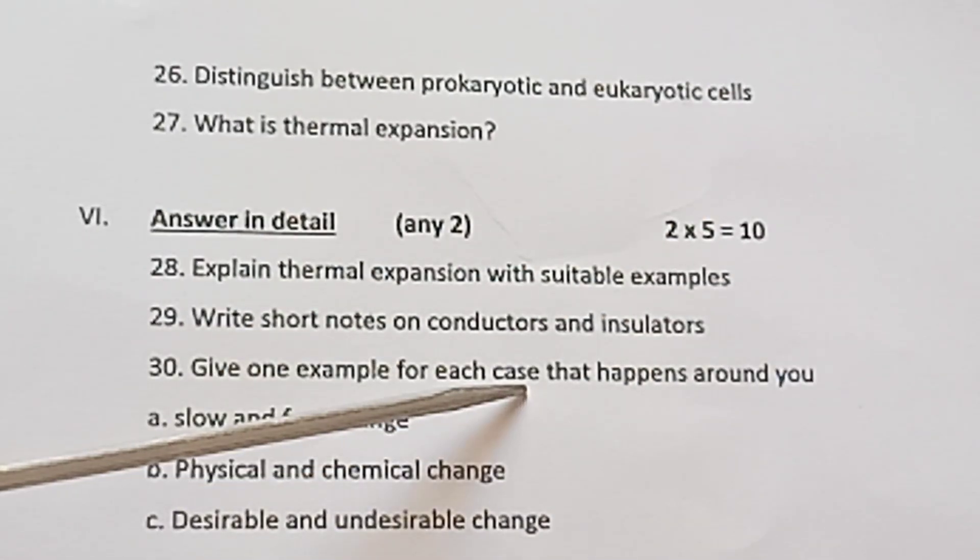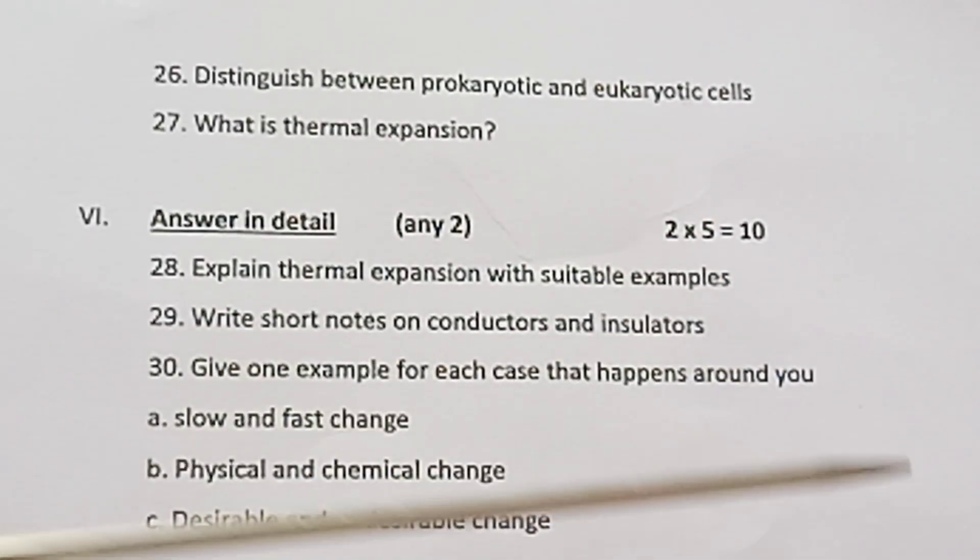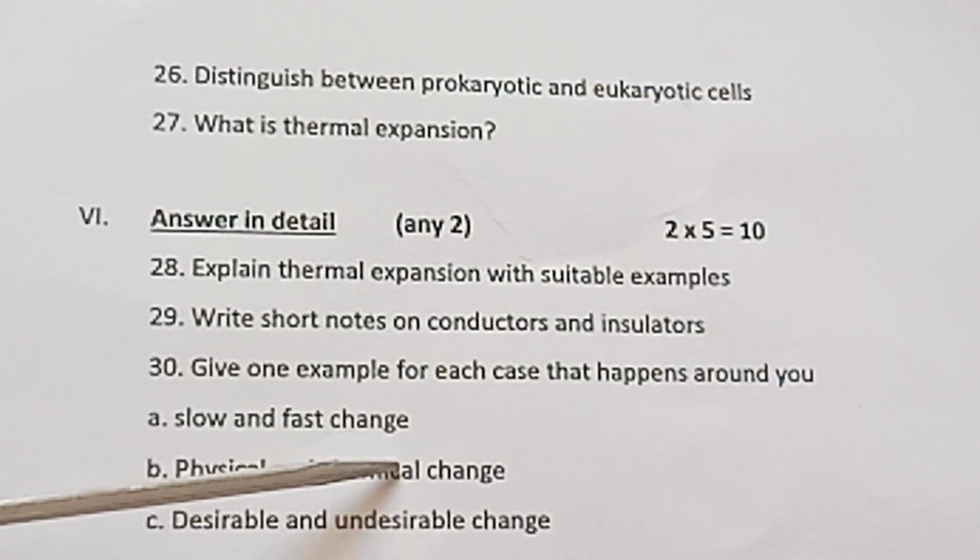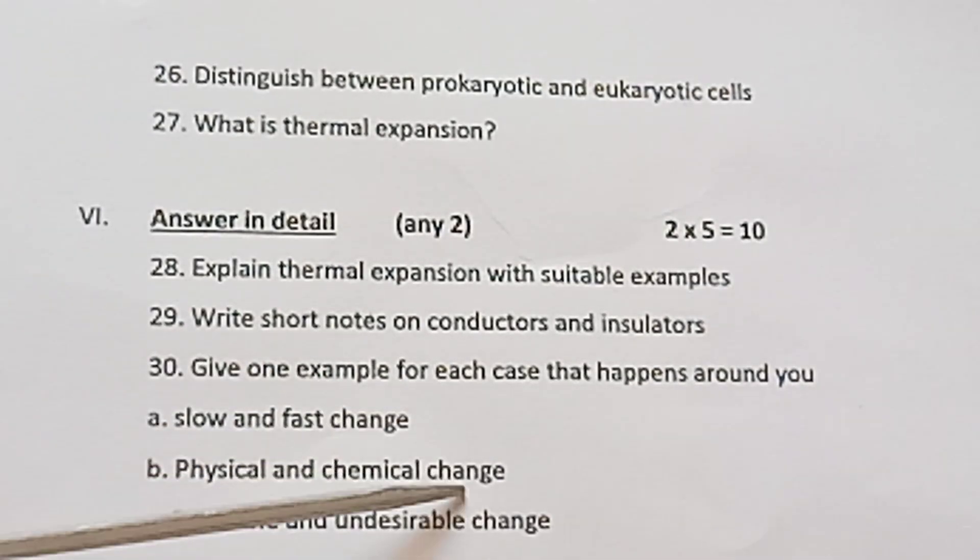Question 30: Give one example for each case that happens around you. a) Slow and fast change, b) Physical and chemical change, c) Desirable and undesirable change.